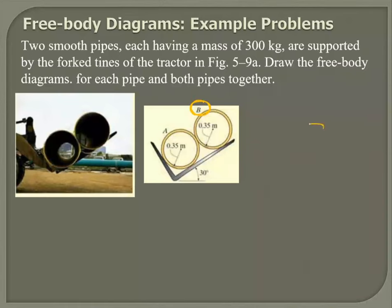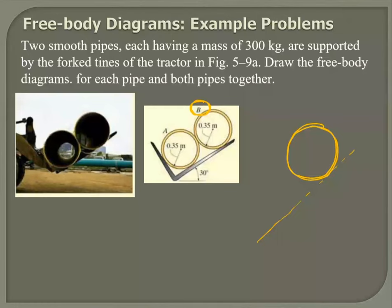So you draw only pipe B here. B pipe has got a mass of 300, and it is basically on an inclined plane. I'm looking at B, not at A. If I have to draw a free body diagram of any object, I will draw that object only and cut it off from the surroundings. So what is acting on B only? There's a weight acting downward — that is my active force.